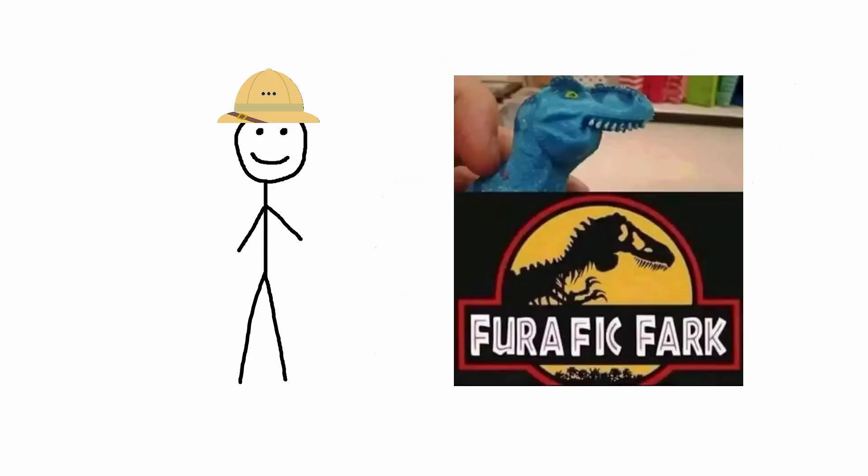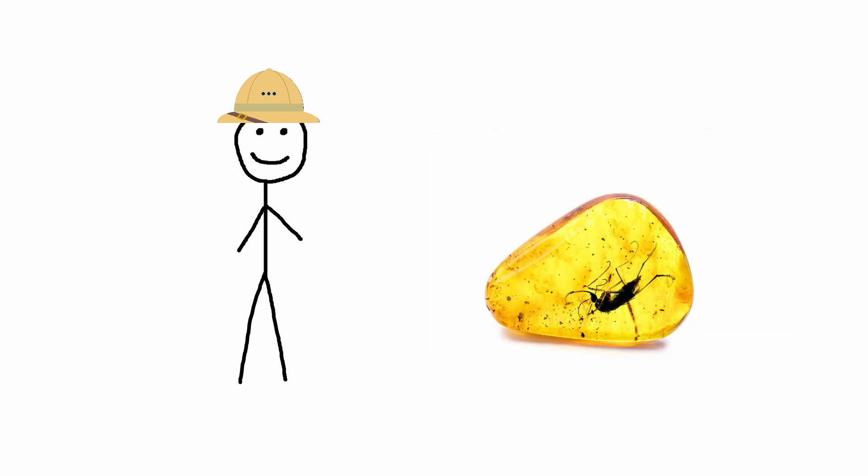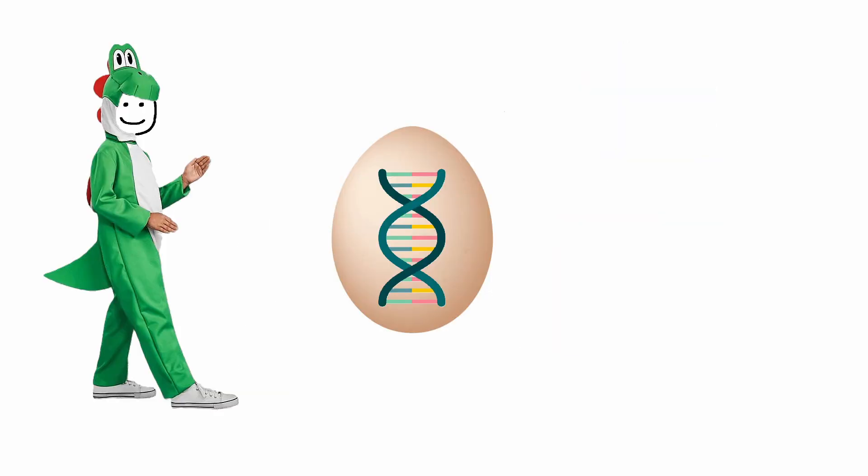So even if we take the Jurassic Park scenario and we had dinosaur DNA from mosquitoes preserved in amber, that DNA would still be broken down to the point where it would be unusable for cloning. Even if we did have the DNA...